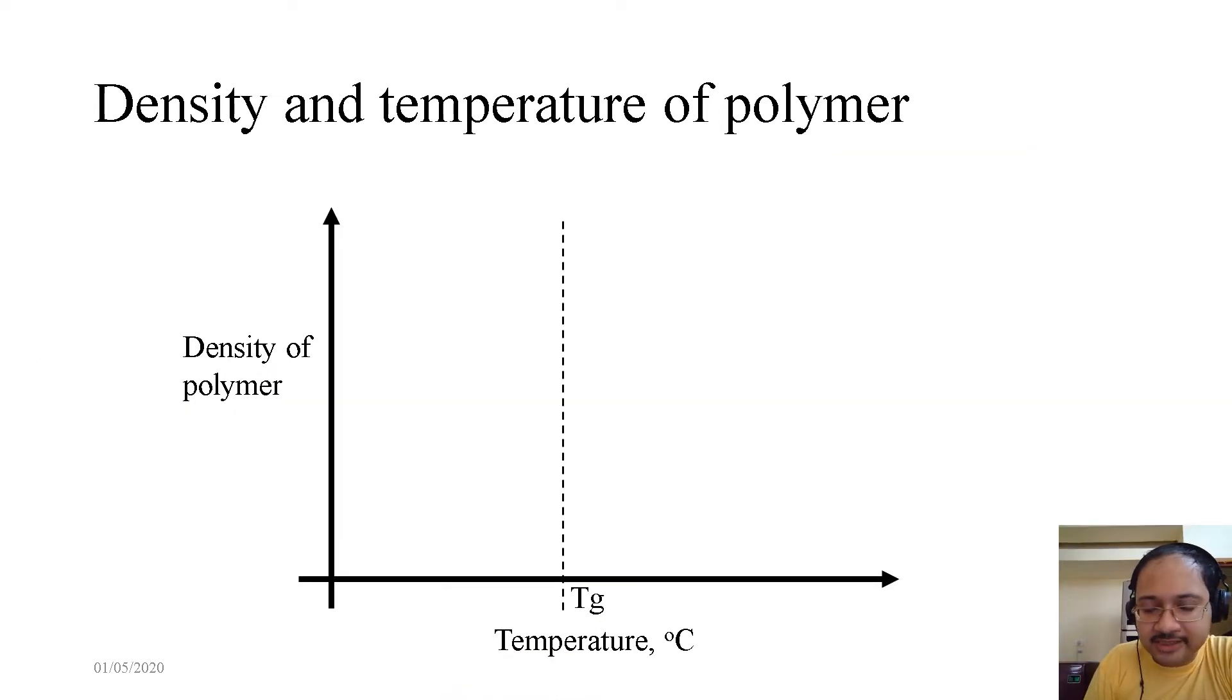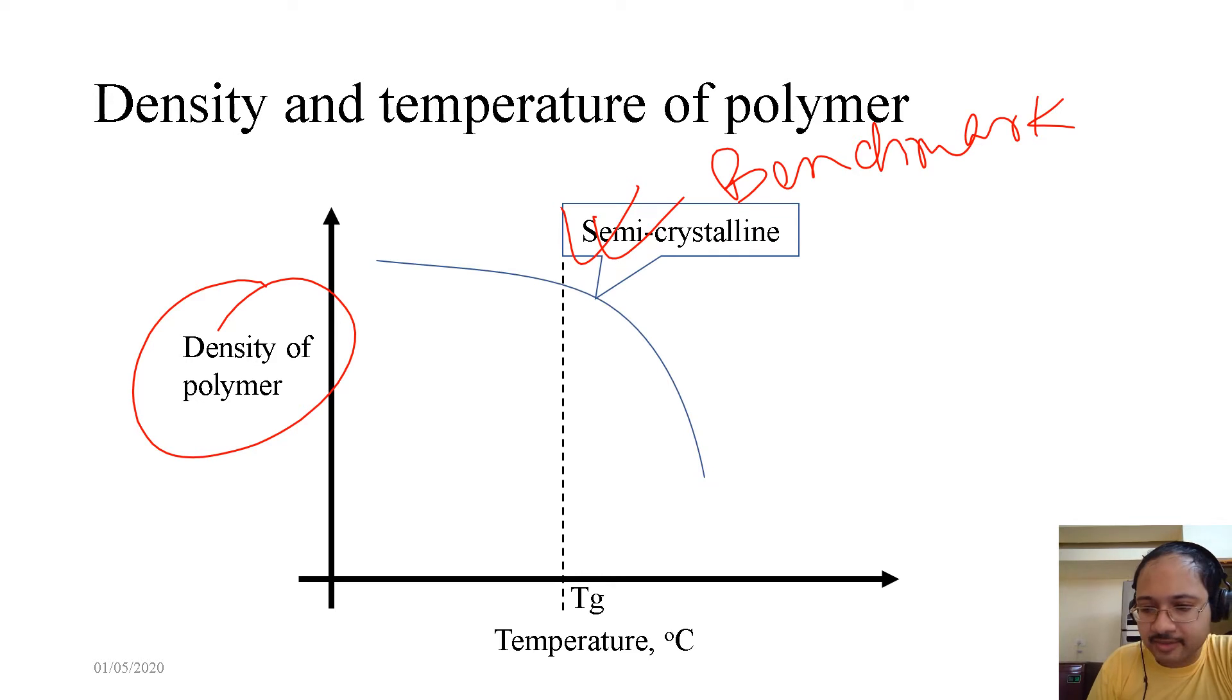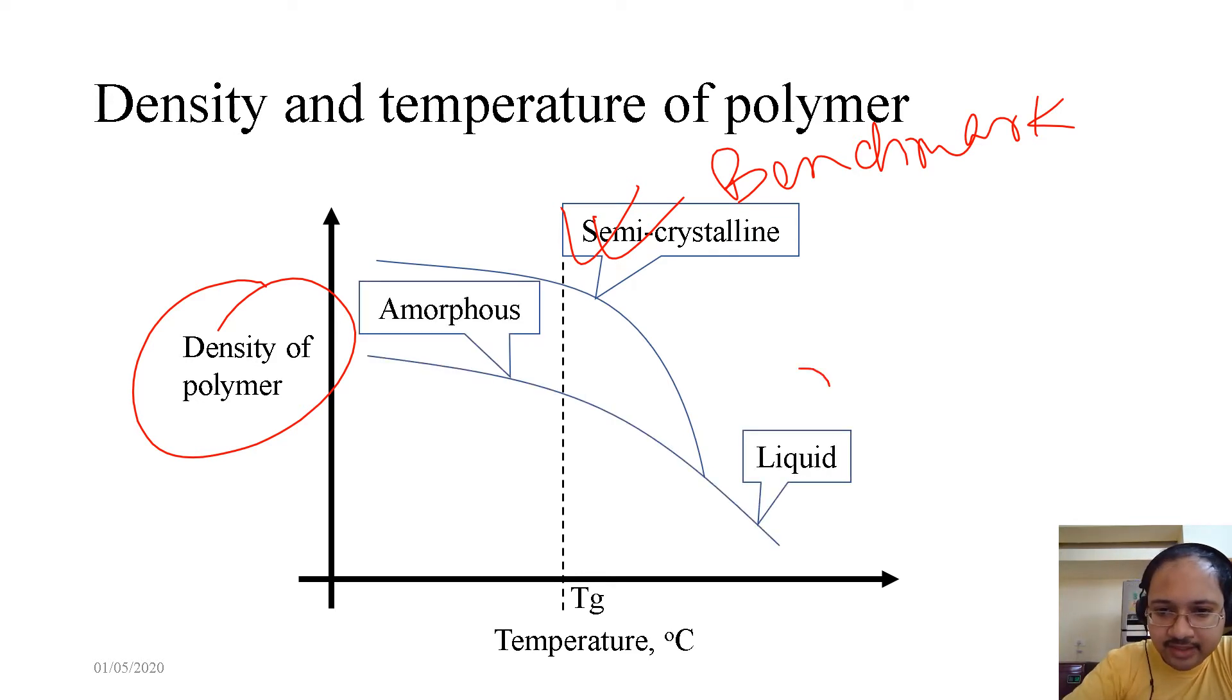Now coming to density and temperature of polymer. If we increase the temperature, does it affect the density of the polymer? The answer is yes, it does. We have this Tg as a benchmark. This is the semi-crystalline. This is the amorphous. And here is the liquid phase, because we have already increased the temperature far away from the glass transition.